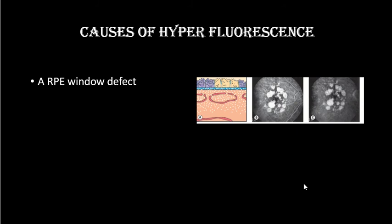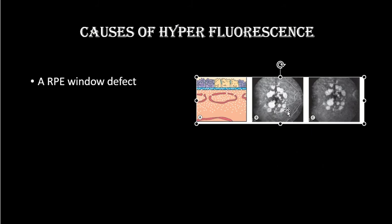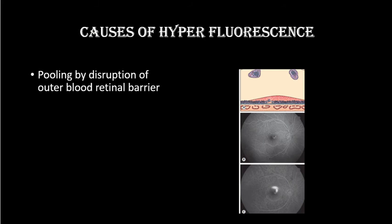RPE window defect is caused by atrophy of the RPE cells, which gives rise to hyperfluorescence seen in the early phases of the retinal angiogram. The size of the fluorescent area remains the same throughout the angiogram, and though fluorescence remains the same in size it reduces in intensity in late phases — after 10 minutes it fades out. This is because atrophy of the RPE cells exposes the underlying choroidal fluorescence.